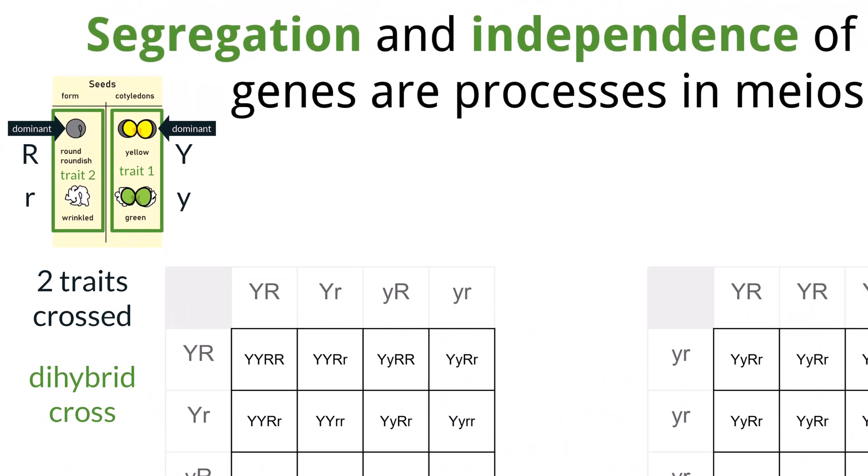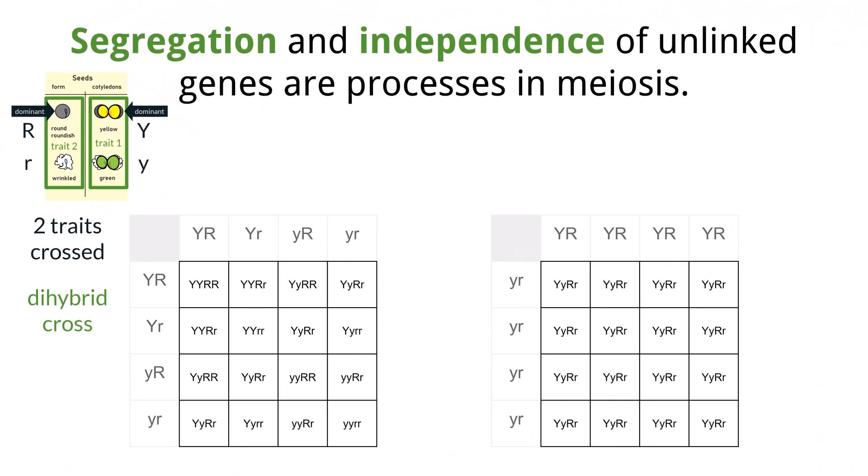With each parent having two of each allele, we can see that there will be 16 possible different combinations in offspring. These alleles are randomly shuffled and equally distributed between the gametes. This means there should be predictable ratios in offspring.